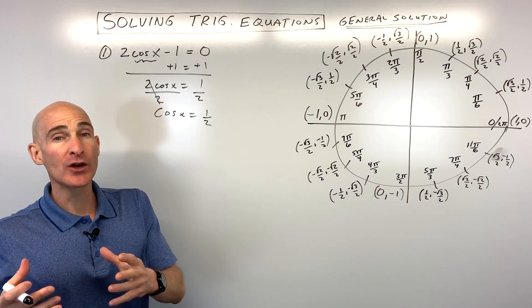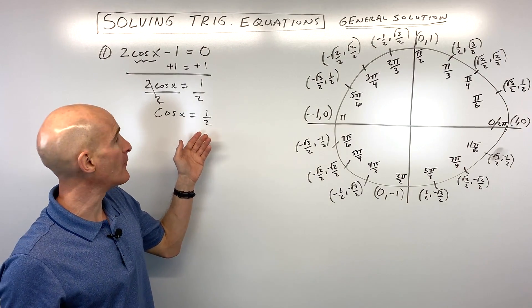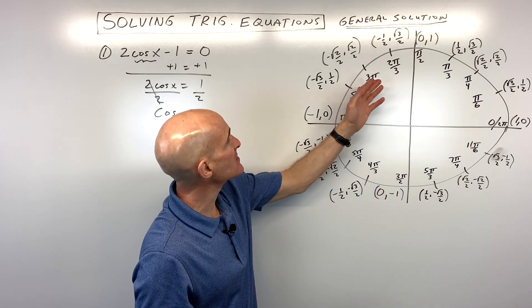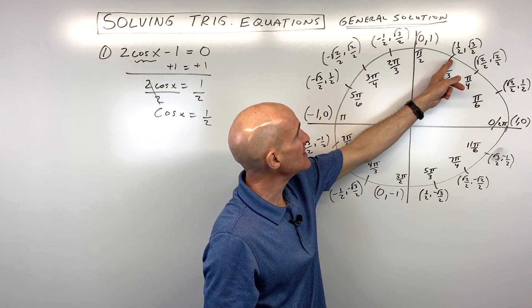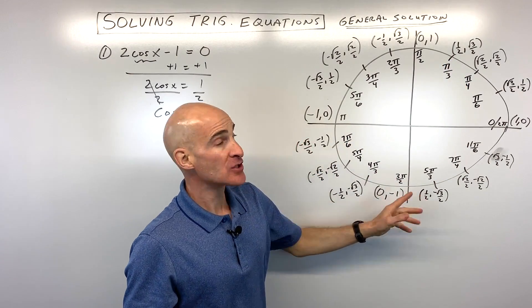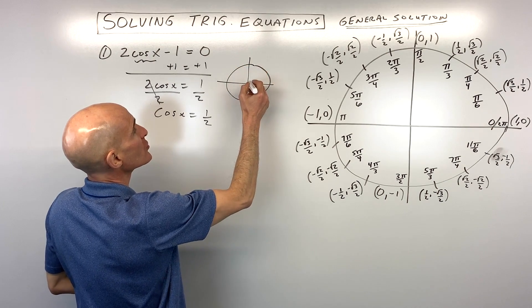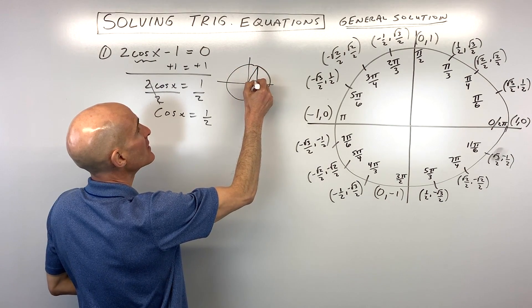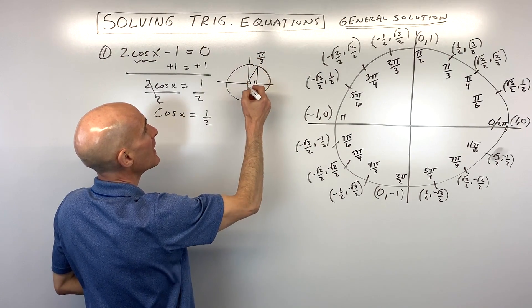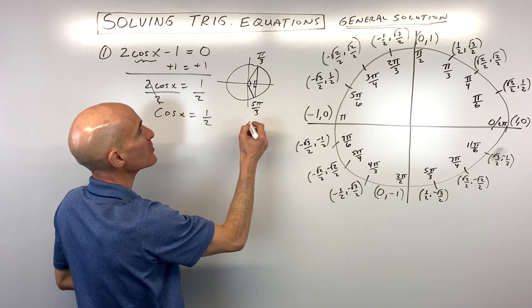So now what we want to do is we want to go to the unit circle and we want to ask ourselves, where is cosine equal to 1 half? Well, remember, on the unit circle, cosine is the x-coordinate. And so let's see, where is the x-coordinate 1 half? Well, we can see it's here as well as here. So if I just draw a little sketch over here just to illustrate, here's our unit circle. And you can see cosine is 1 half right here at pi over 3 or 60 degrees and over here at 5 pi over 3 or 300 degrees.